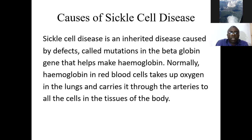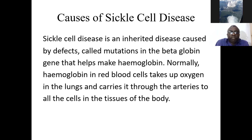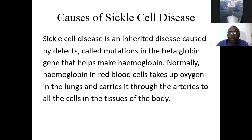The causes of sickle cell disease: it is inherited and caused by defects — called mutations — in the beta globin gene that helps make hemoglobin. When we talk about beta, we're talking about the original material used to make hemoglobin.